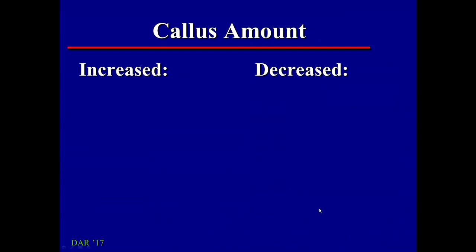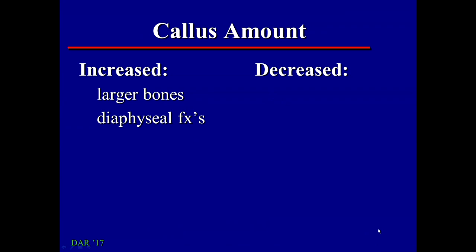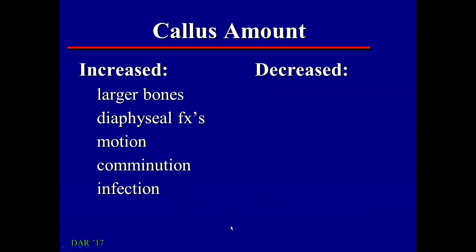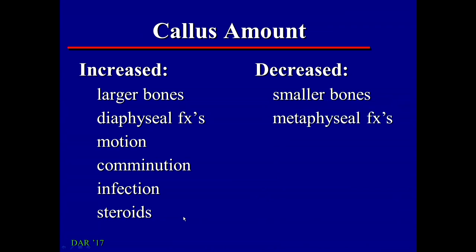How much callus there is depends on several factors. Fractures of larger bones — where there's a bigger hematoma to start with — will have more callus formation, as will fractures in the shafts of bones. Fractures where there's motion while healing will have more callus, so a fracture treated with a splint or cast will typically have more callus than one treated with rigid internal fixation. Fractures in multiple parts, infected fractures, and patients with increased steroids — either endogenously from Cushing's disease or exogenously from medications — will also have increased callus. The opposite is true for small bones, metaphyseal fractures, and impacted fractures.